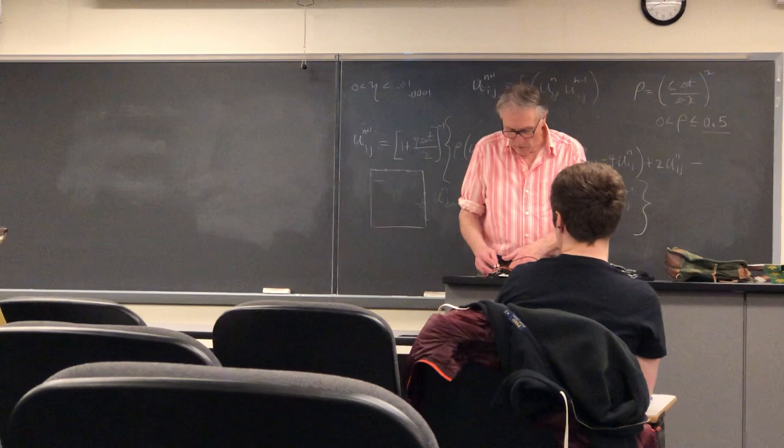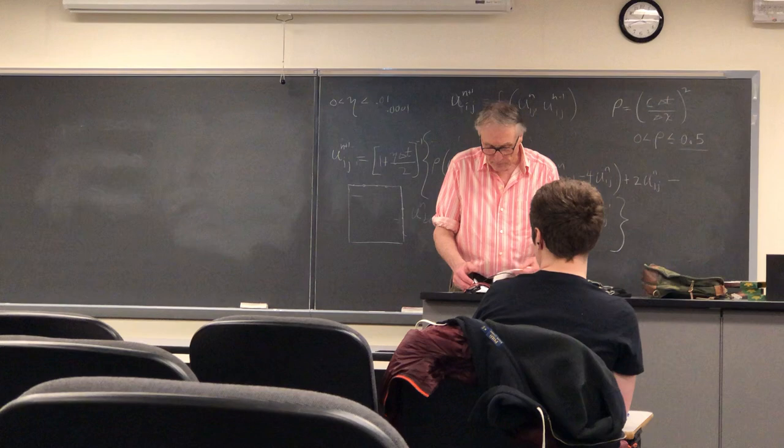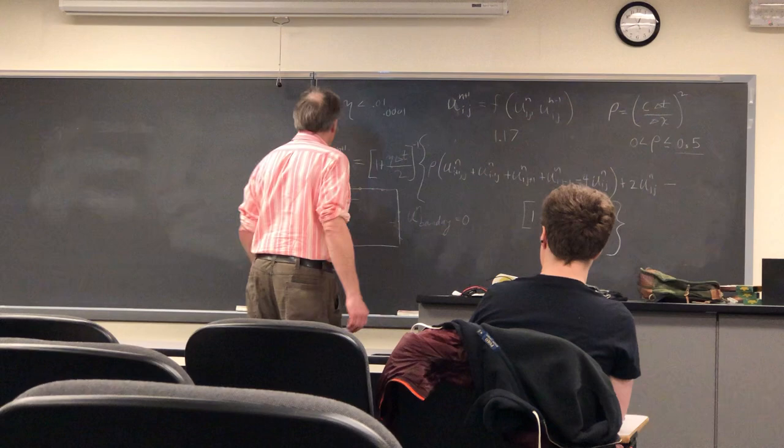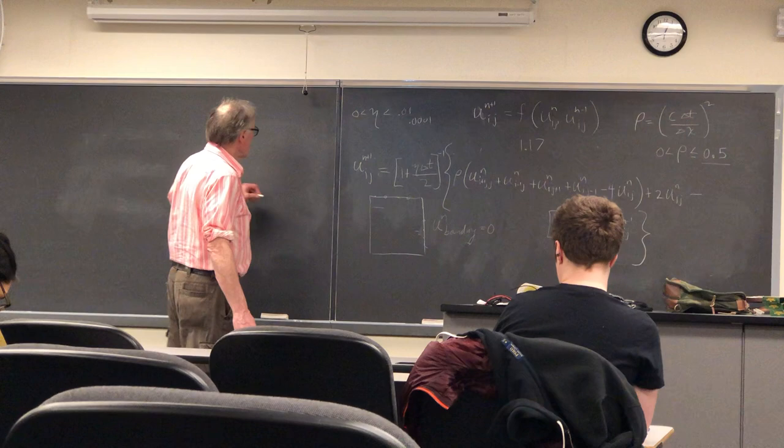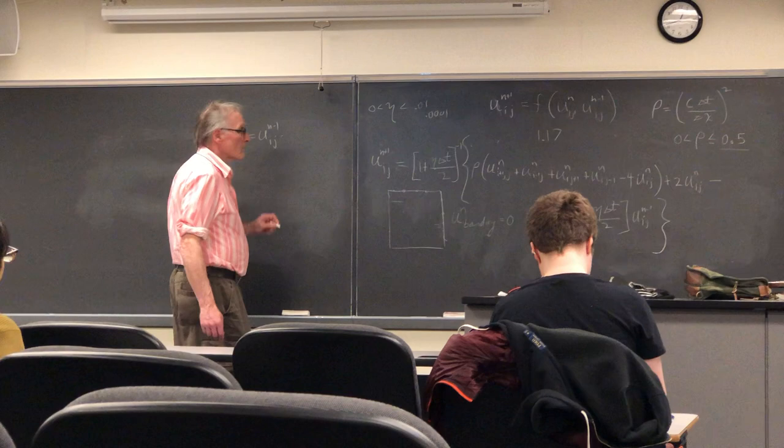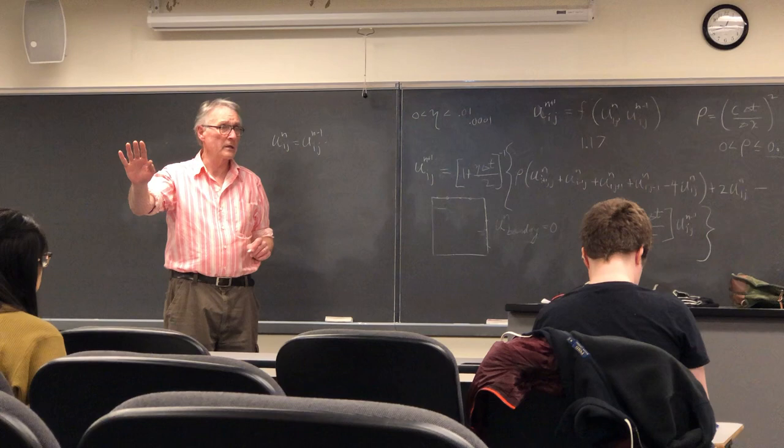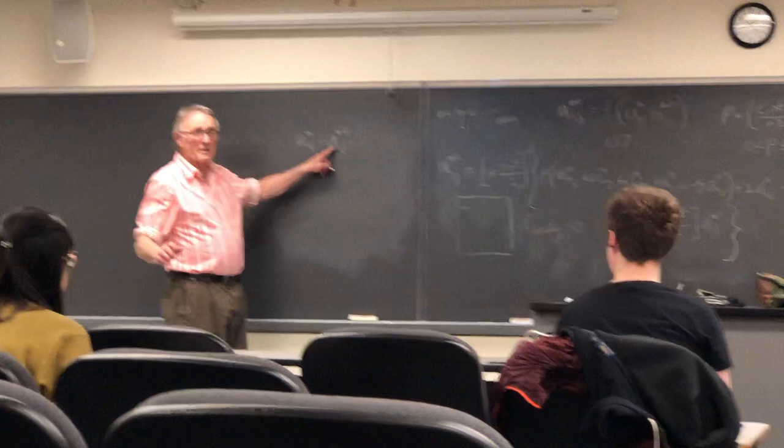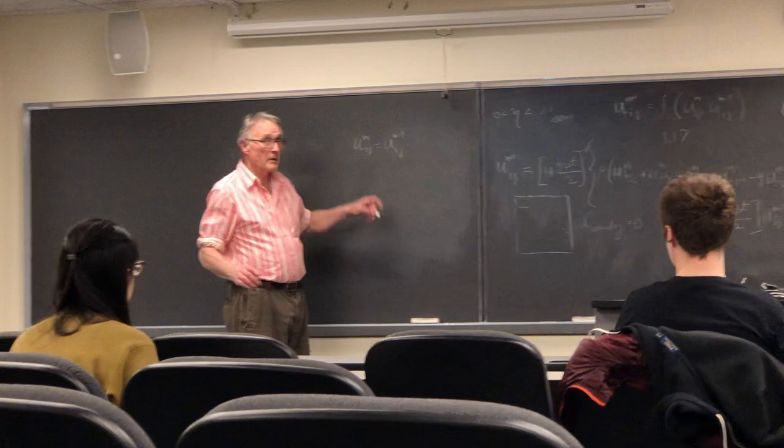The initial conditions we have to be a little more careful of because of aliasing. But more or less, what you're going to do is to set U of N, I, J equal to U of N minus 1, I, J, which guarantees zero velocity because if the membrane didn't move between these two time steps, it must be stationary. Therefore that's a zero velocity condition.